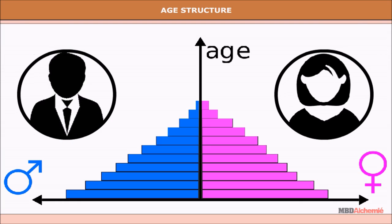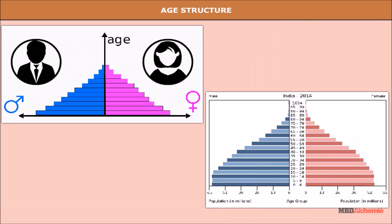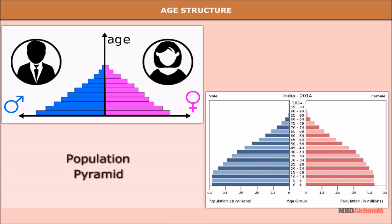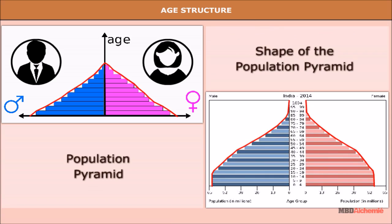The age-sex structure of a population is based on the number of females and males in all age groups. This age-sex structure is shown as a population pyramid, and the shape of the population pyramid reflects the characteristics of the population.